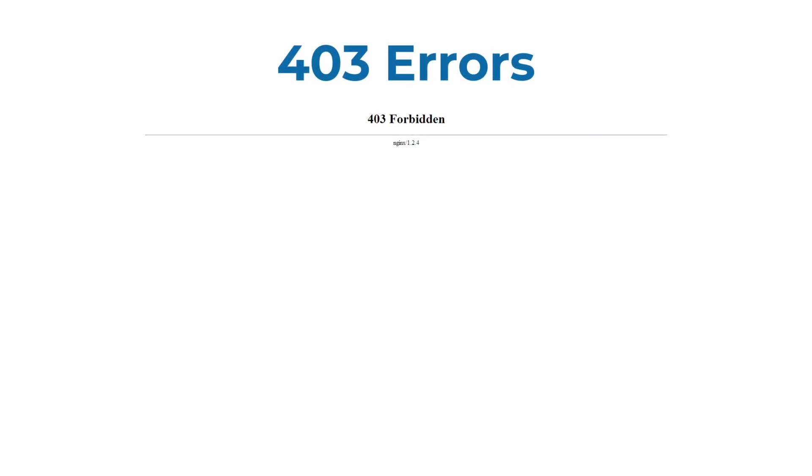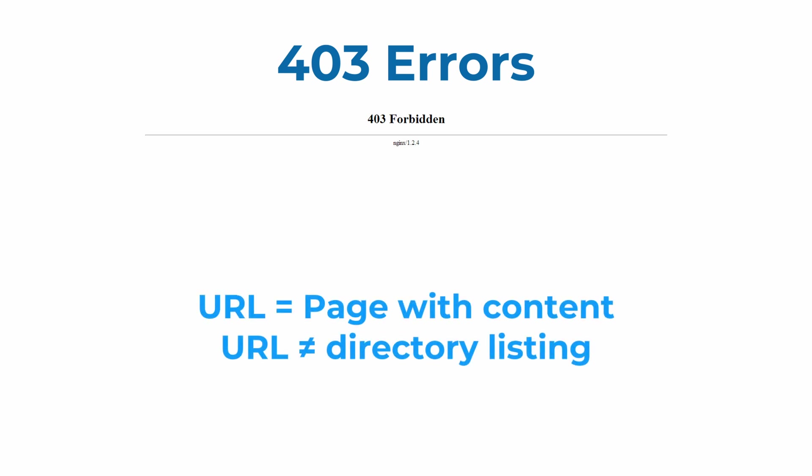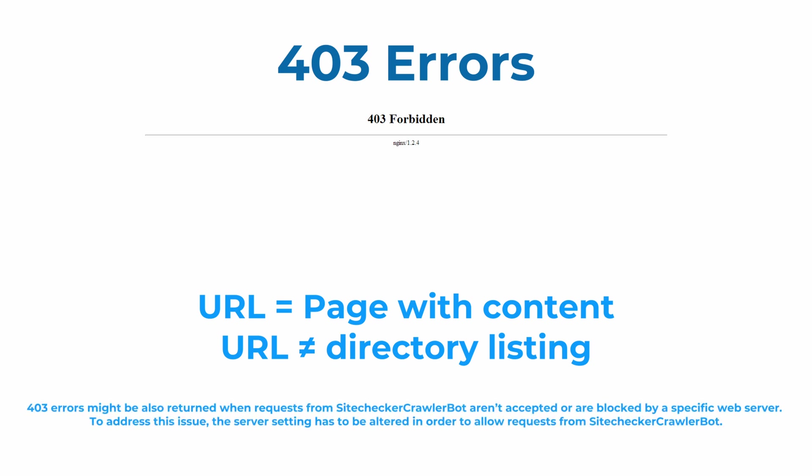Now let's see what can be done with 403 pages. Check that the URL links to a page with content rather than a directory listing, since this is the most common cause behind a 403 error. If the page indeed links to a directory listing, change all the links leading to this URL or create a 301 redirect to a new URL. Such error is also possible when requests from SiteChecker Bot aren't accepted or blocked by a specific web server. To address this, the server settings have to be altered in order to allow requests from SiteChecker Bot.